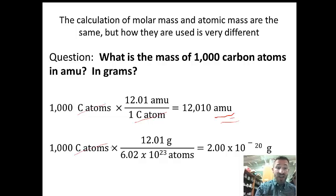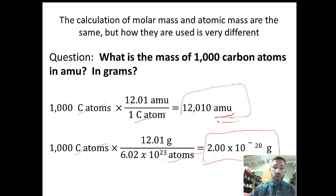For the next one, we say 1,000 times 12.01 divided by 6.02 times 10 to the 23rd. Notice this is an extremely small number, so you get 2.00 times 10 to the minus 20 grams as opposed to 12,010 AMUs.